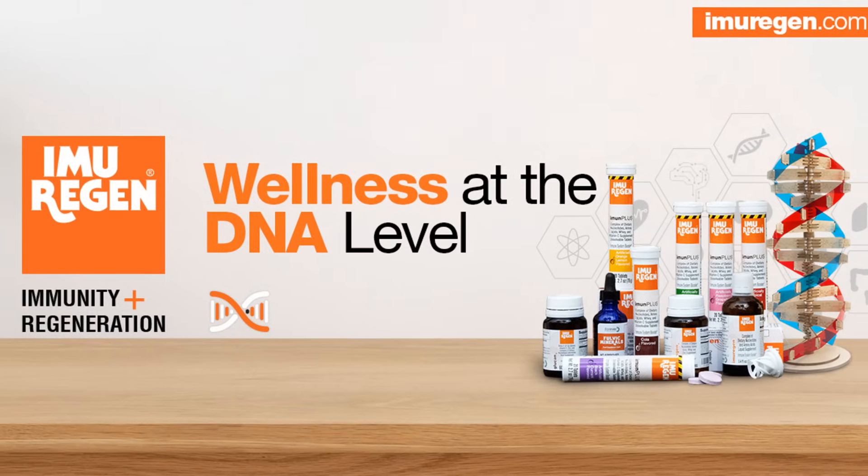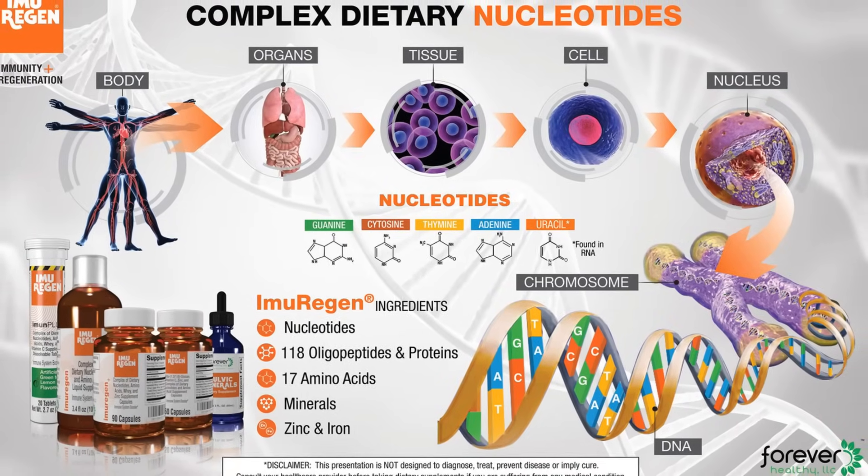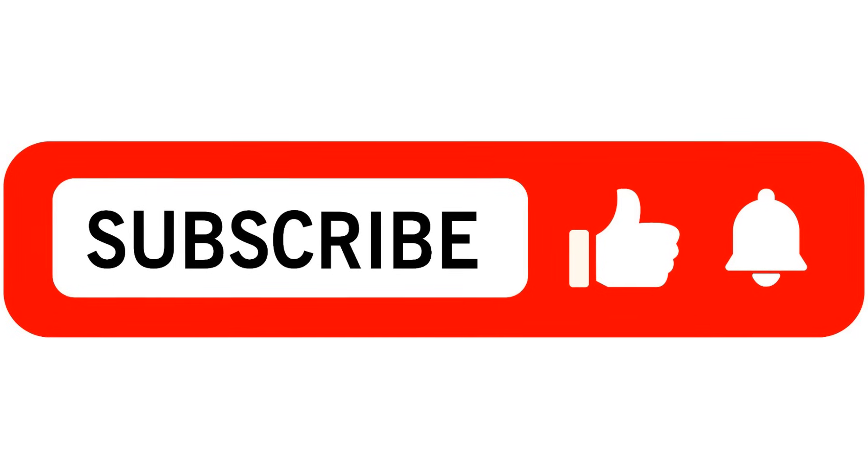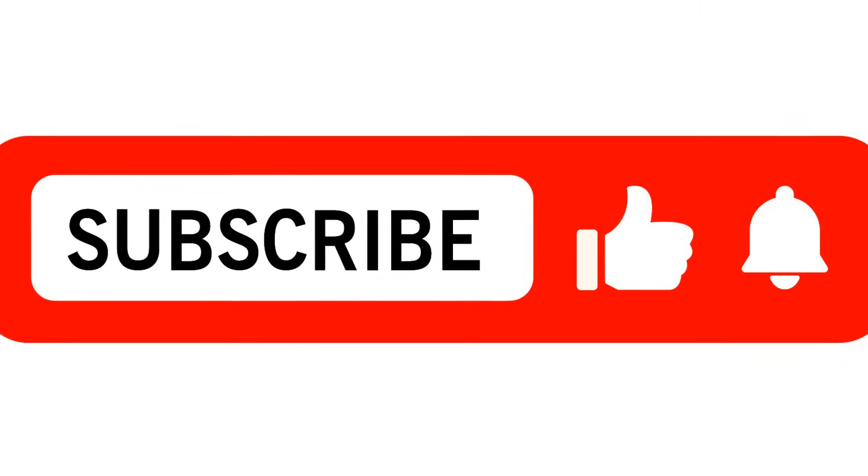This is brought to you by Imurrigan. Imurrigan contains nucleotides, oligopeptides, 17 amino acids, and trace minerals. Like, subscribe, and click on the notification bell to watch the upcoming videos on nucleotides and essential nutrition. Visit Imurrigan.com to learn more.